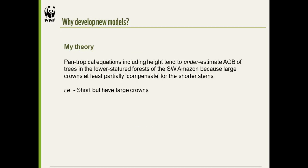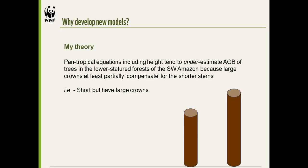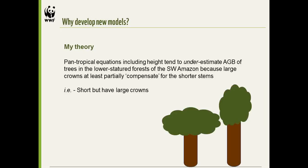My theory and the impetus for making new allometric equations is that pantropical equations including height tend to underestimate the biomass of trees in the lower-statured forests of the southwestern Amazon, because large crowns at least partially compensate for their shorter stems. Yes, they have shorter stems, but they also have large stems and large crowns — so I'm saying we need to look at the whole tree, including the crown.